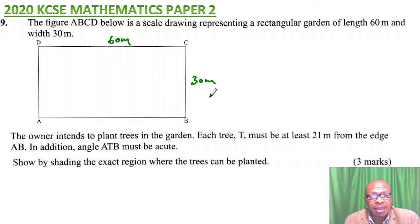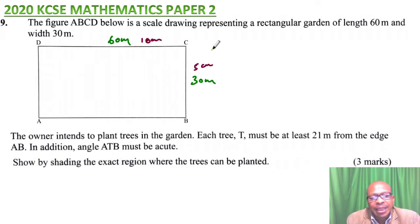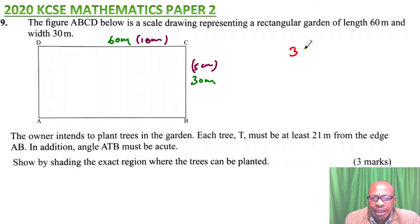We need to shade the exact region where the trees can be planted, worth three marks. Since the diagram is drawn to scale, take a ruler and measure — you'll find this side is 5 centimeters and this side is 10 centimeters using the ruler on the paper. This means we can find how many centimeters represent 21 meters. We can write: 30 meters is to 5 centimeters.